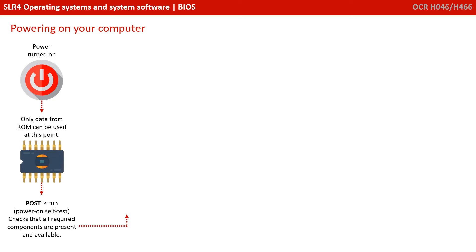One of the first things your ROM does is run the power-on self-test. It checks that all the required components are present and available. It actually clears anything that may still be in the registers of the CPU. Of course, if these are volatile there would be nothing here, but it's a safety step that's done anyway.